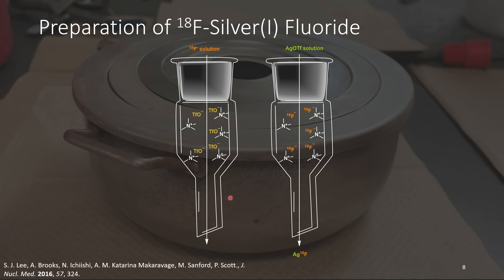18F silver fluoride can be prepared through the treatment of a quaternary methyl ammonium cartridge which has been pre-functionalized with triflate, and by passing the solution from the cyclotron through this, it is able to displace all of the triflate groups. Finally, if you elute the column with a silver triflate solution, you're able to elute off 18F silver fluoride.